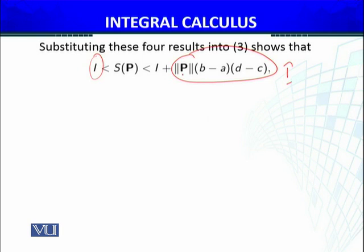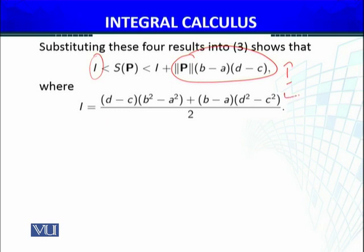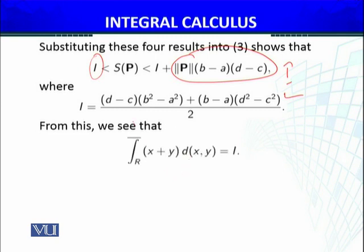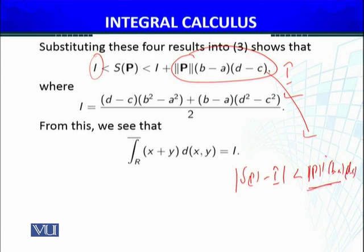This can be made as small as I wish, meaning |s(P) - I| < ||P||(b - a)(d - c). This thing is arbitrarily small, so indeed s(P) equals I.